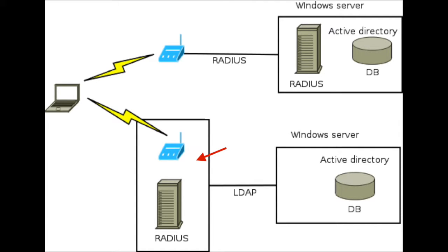As you can see in the picture, usually the RADIUS server like a Windows 2012 server will have the RADIUS server software and the database in it. But if you want to use one of the access points as the RADIUS server and integrate that with the database of Active Directory, we can do that as well using an AeroHive access point.